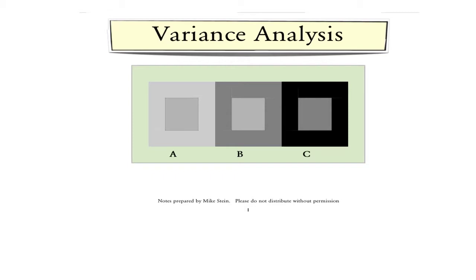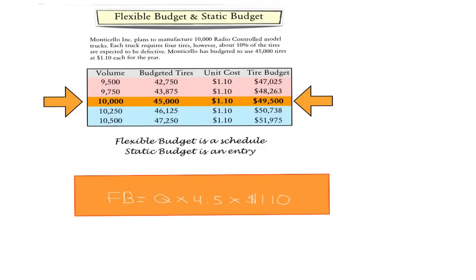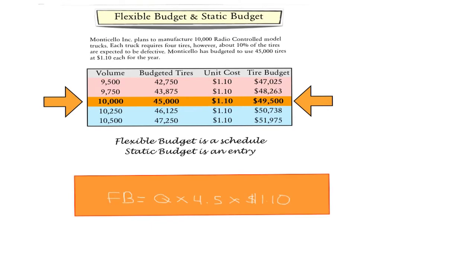The hope of variance analysis is to direct managerial attention towards processes that need improvement. When we use a budget as a benchmark, it is often the case that we need to adjust the budget for the actual level of outcome as opposed to the anticipated level of outcome.